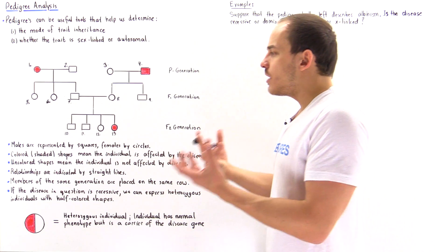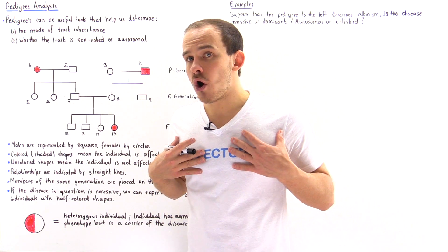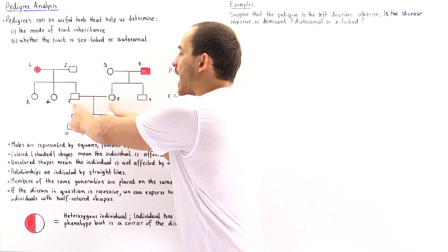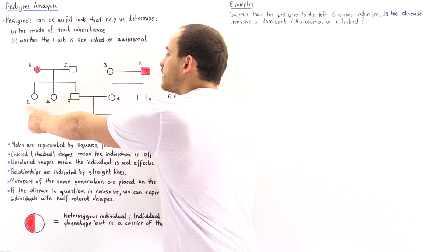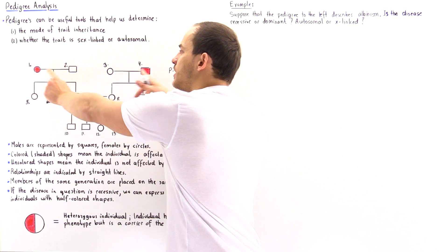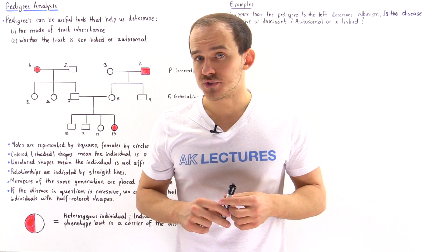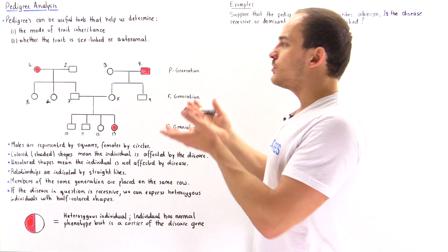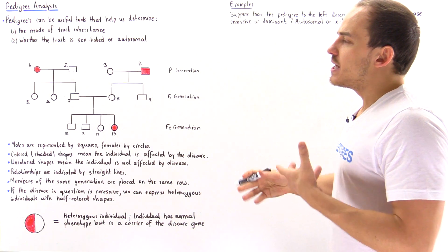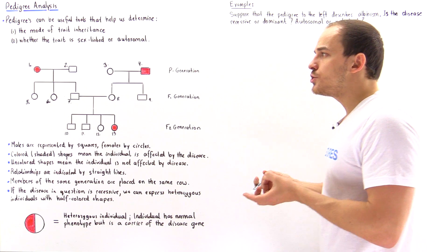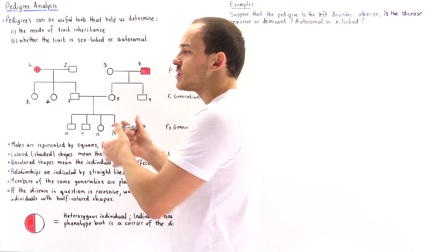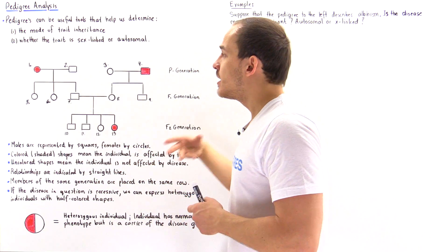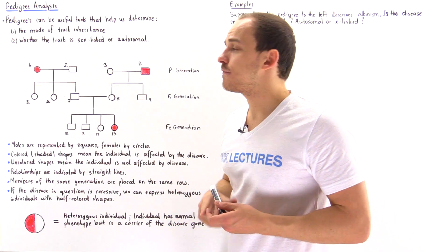Said another way, if we belong to the F1 generation, then the F2 generation are our parents, their siblings are our parents' siblings, and the P generation are our grandparents. The lines in the pedigree describe the relationship between the different individuals of our family, since the pedigree describes the ancestry of our family.